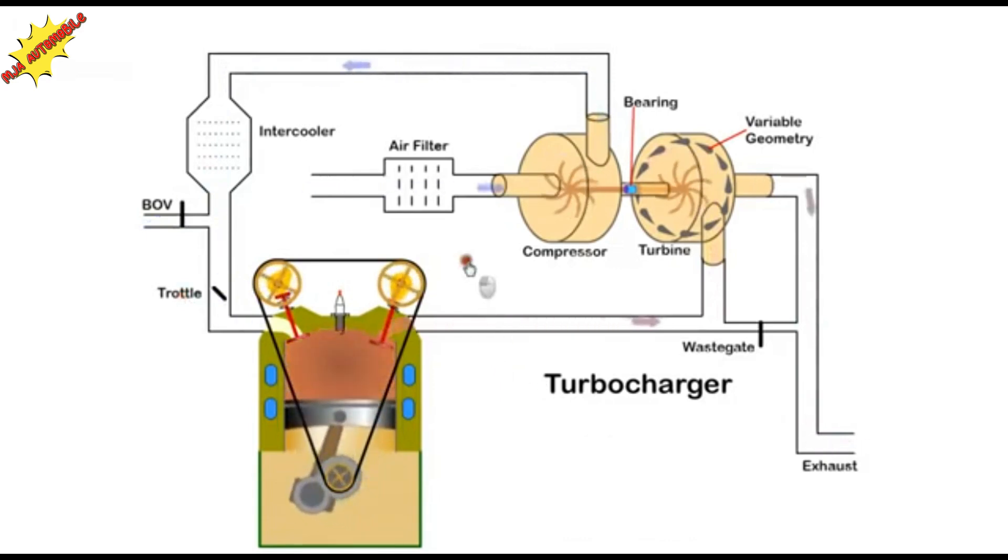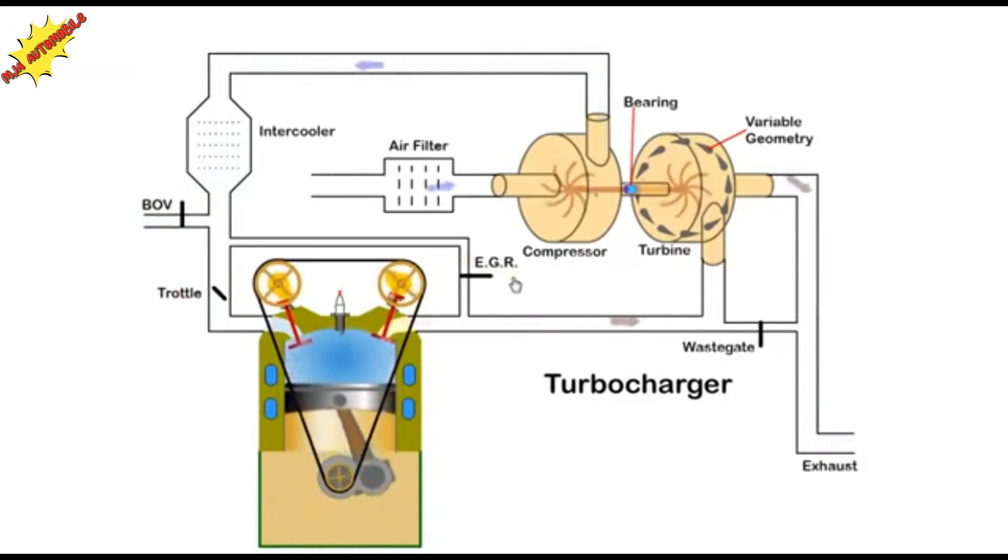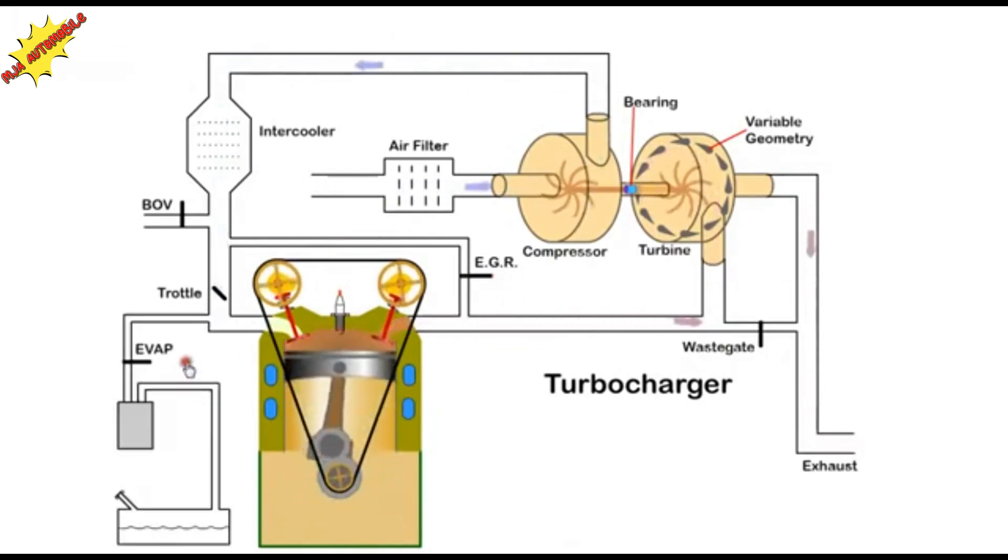Exhaust gas recirculation, EGR, recirculates a small amount of exhaust gas back to the inlet under certain operating conditions. This reduces the amount of oxygen in the charge and helps to reduce combustion temperatures and emissions.